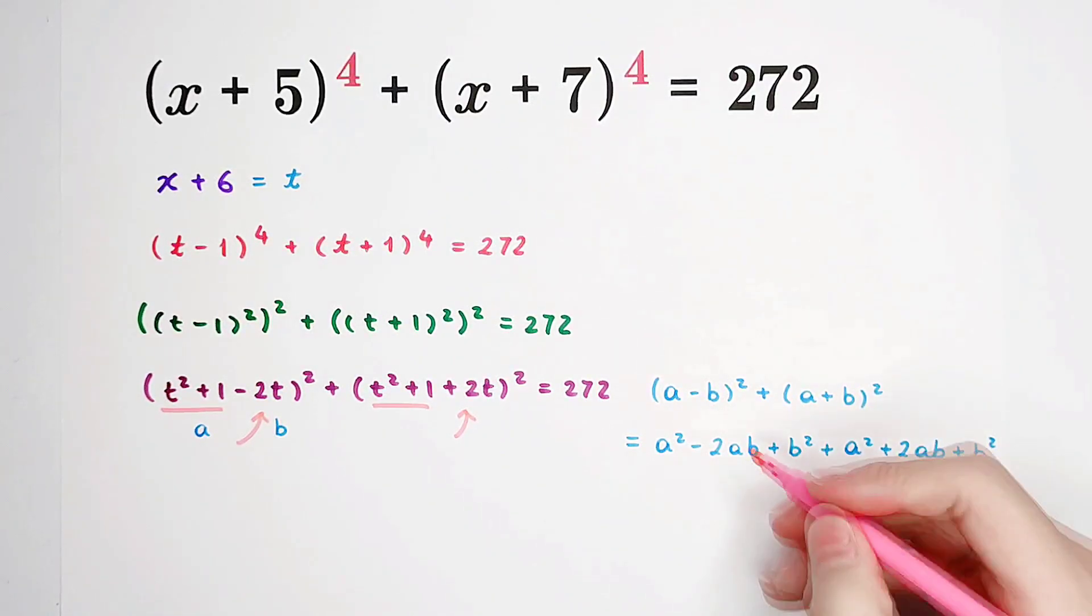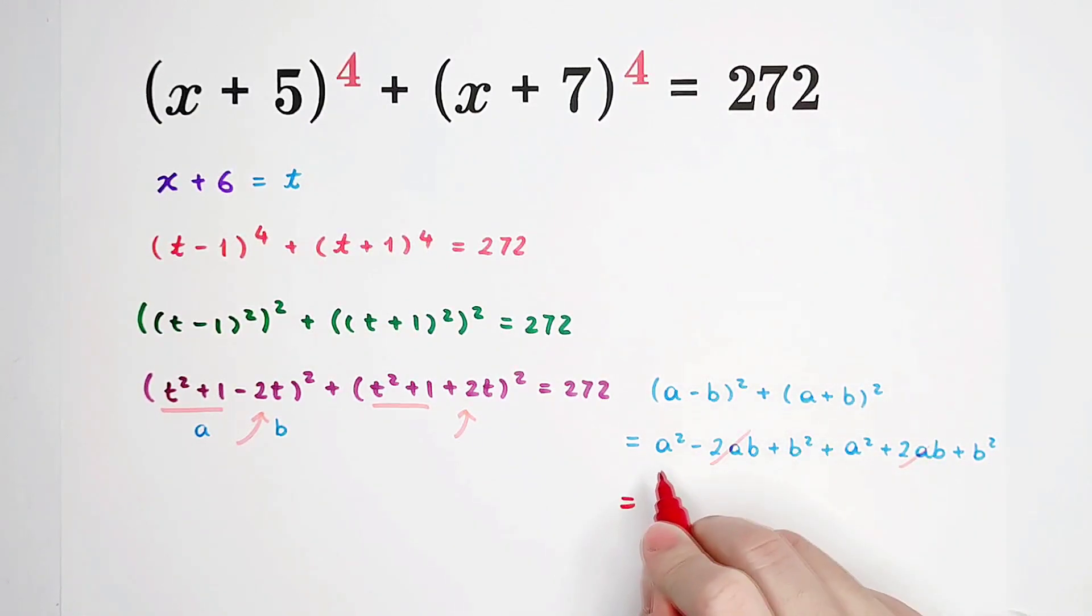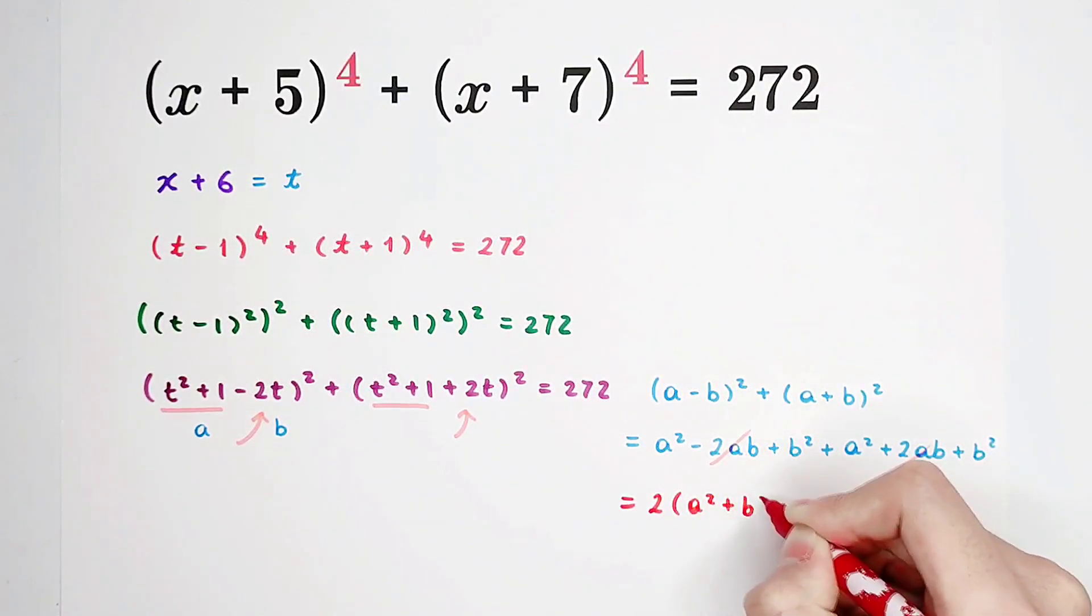Now you can see, minus 2ab plus 2ab canceled. So this is just a squared plus a squared plus b squared plus b squared. That is 2 times a squared plus b squared.